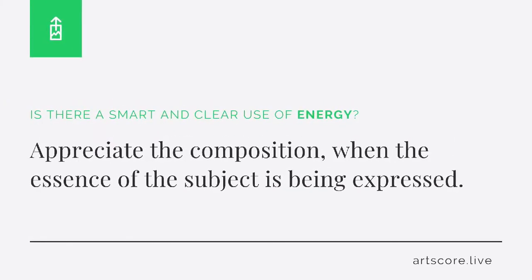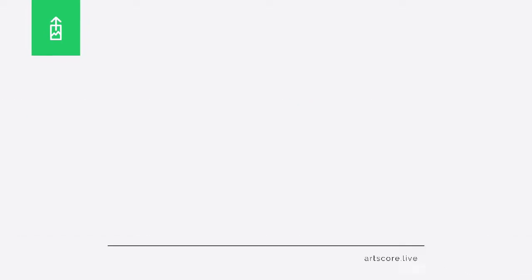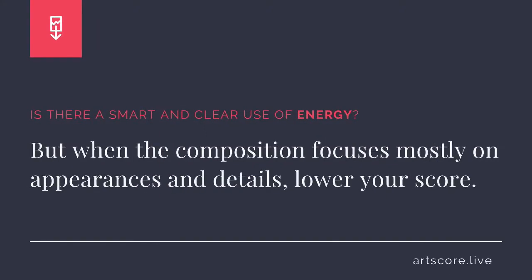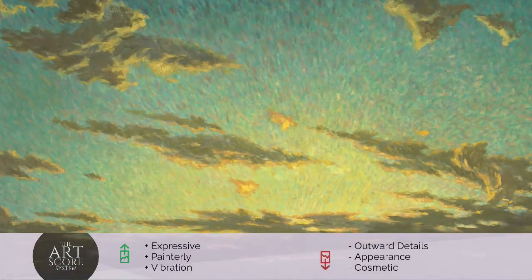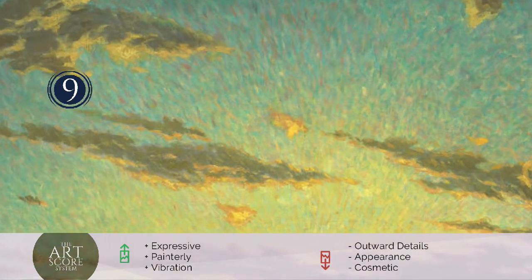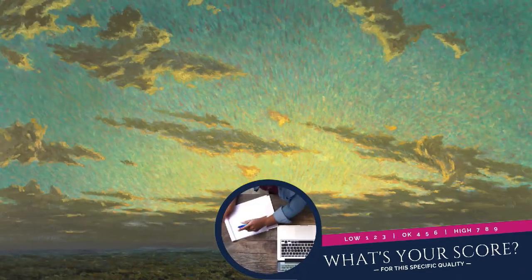Energy. Is there a smart and clear use of energy? Appreciate the composition when the essence of the subject is being visually expressed. But when the composition focuses mostly on outward appearances and details, lower your score. I scored the composition a 9. For me, I clearly see how the artist expresses the essence of the subject in a painterly way. The painting visually vibrates with character and energy.